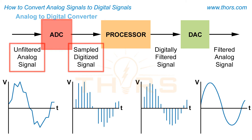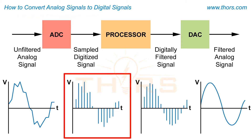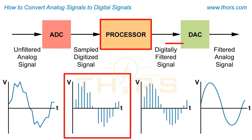After the signal is converted to a digital format, it will go through a processor that will filter the digital signal.